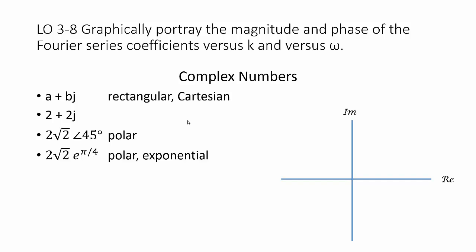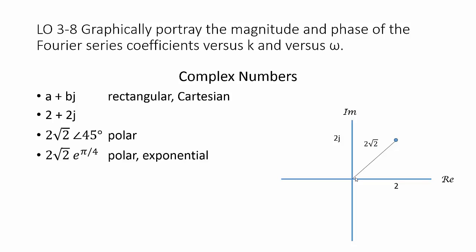To understand where those numbers come from, think about the complex plane with a real axis and an imaginary axis. Locate the point: it has a real value of 2 and an imaginary value of 2j — that's the rectangular Cartesian form. Considering that same point's relationship to the origin gives us the polar form. The distance from the origin is 2 square root of 2 by the Pythagorean theorem, and the phase is the angle the line makes with the positive real axis, which is 45 degrees for this example.